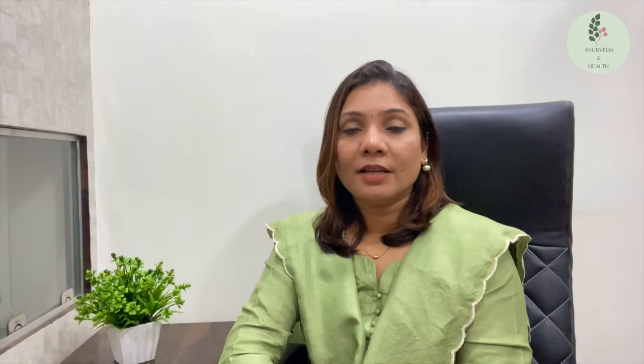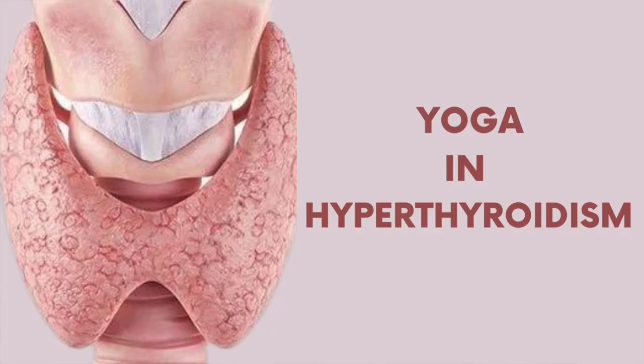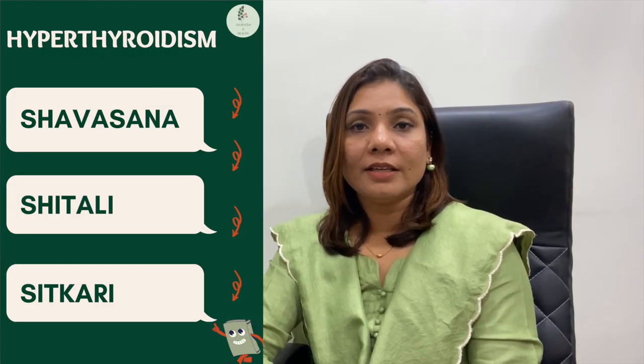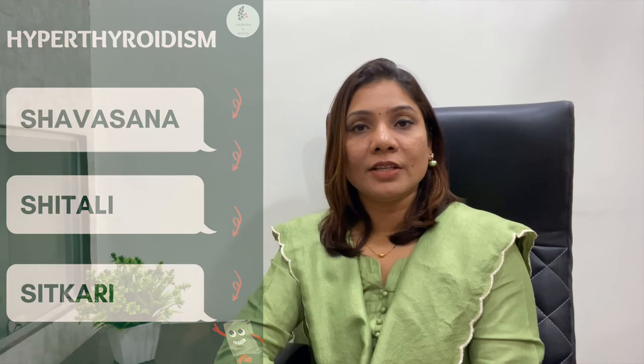For hyperthyroidism, panchakarma chikitsa is done for the aggravated doshas, including virechana chikitsa, basti chikitsa, nasya chikitsa, and abhyanga. For medicinal treatment, amla and shatavari are among the medicines used. For yoga in hyperthyroidism, Shavasana, Sheetali, and Sitkari pranayama practices are performed.